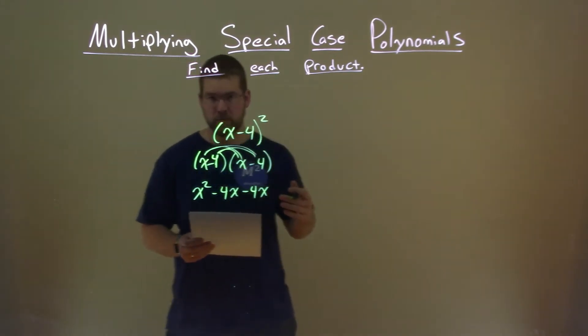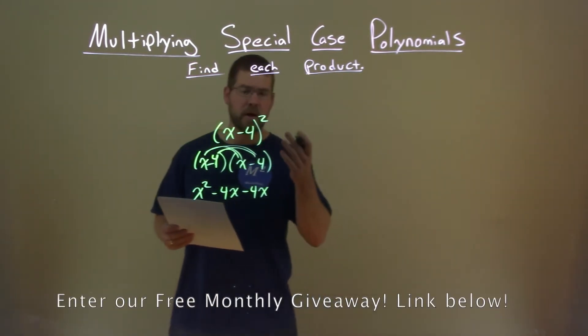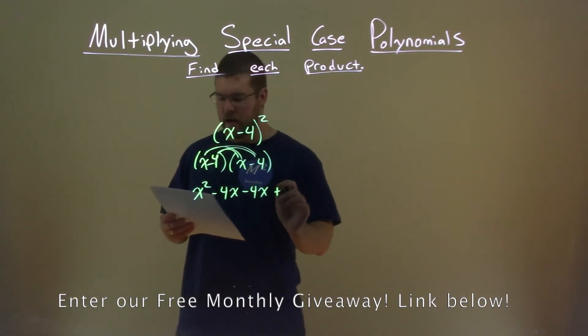And minus 4 times minus 4, well, that's a positive, right? Two negatives make a positive, positive 16.